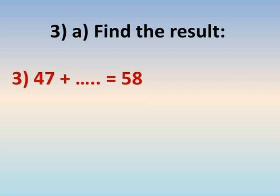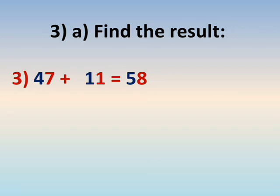Number three: 47 plus dots equals 58. Count from the smallest to the greatest. The number has units and tenths, so work on units and tens separately. Seven plus something equals eight — count from seven to eight: one. Four plus something equals five — count from four to five: one. Write eleven.